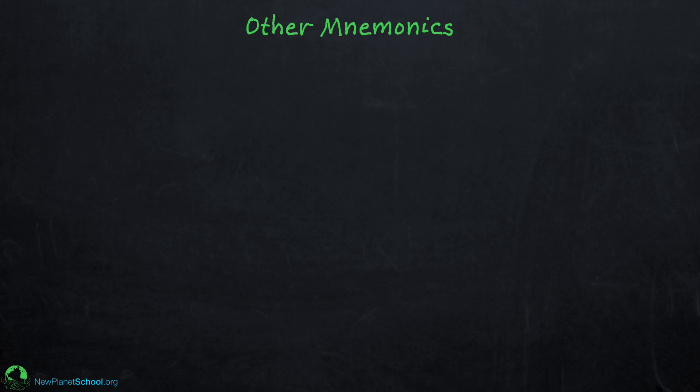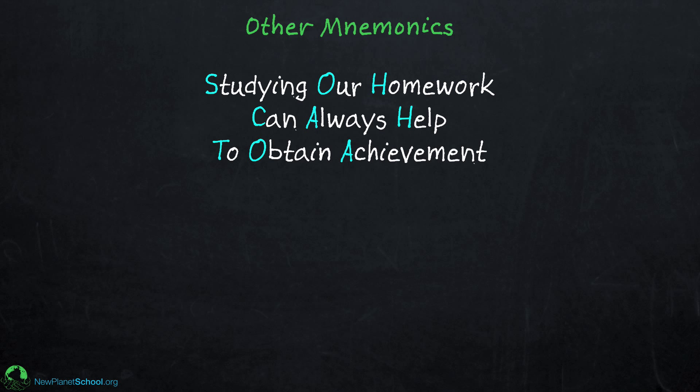Now, what if you forget SOHCAHTOA? That's possible — you're trying to remember that sine is opposite over hypotenuse and you're trying to remember SOH, but what if you forget it? One way to remember something is to have a mnemonic for the mnemonic. One way to create a mnemonic for SOHCAHTOA is to come up with phrases or sentences that spell out SOHCAHTOA. Here's a really useful example: "Studying our homework can always help to obtain achievement" — SOHCAHTOA.